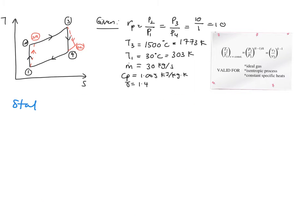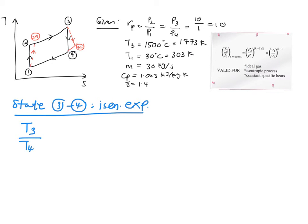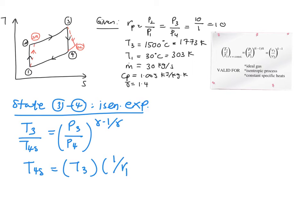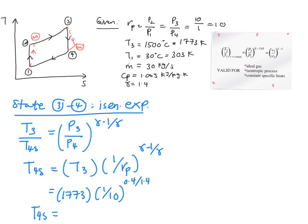Next is to solve the turbine part. State 3 to 4 is an isentropic expansion, so you make use of this relation to find your T4s: T3 over T4s equals (P3/P4)^((γ−1)/γ). Rearranging, T4s equals T3 times (1/Rp)^((γ−1)/γ). Plugging in all the values finally gives T4s equal to 918.32 K.